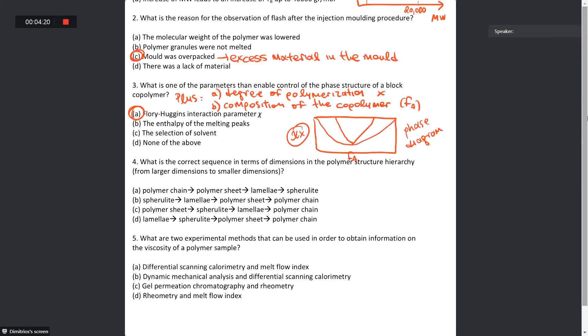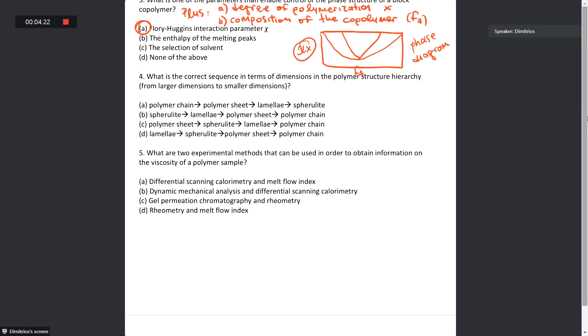For the correct sequence of the polymer structure here, larger than smaller dimensions, obviously if you see larger dimensions, polymer chain is the obvious larger one, and then we move on to spherulite, lamellae, and the polymer chain.